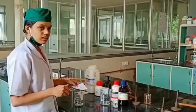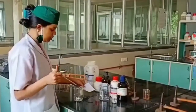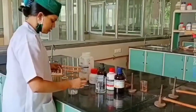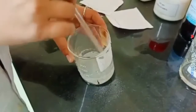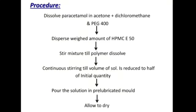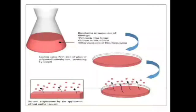Now we are adding hydroxypropylmethylcellulose into the acetone along with dichloromethane. We have to stir the mixture until the polymer is properly dissolved. We must continue stirring the solution till it reduces to half of its initial volume. Then we have to pour the solution into the mold. We can use a petri dish here and allow it to dry. As you can see in the diagram, once we pour the solution into the petri dish or mold, the solution starts evaporating due to its volatile nature.